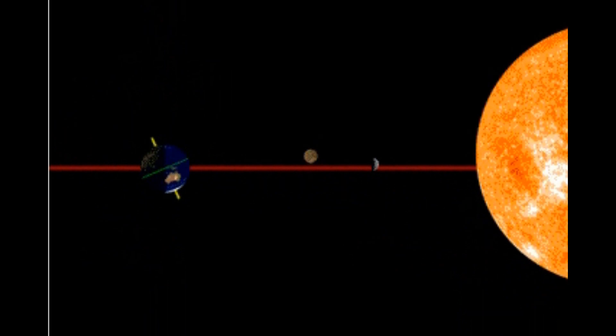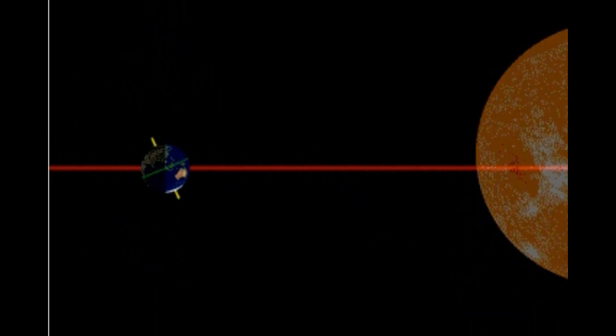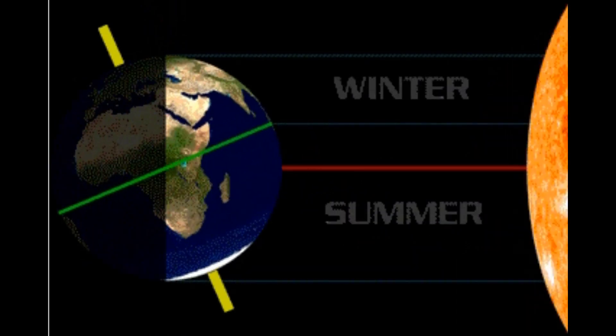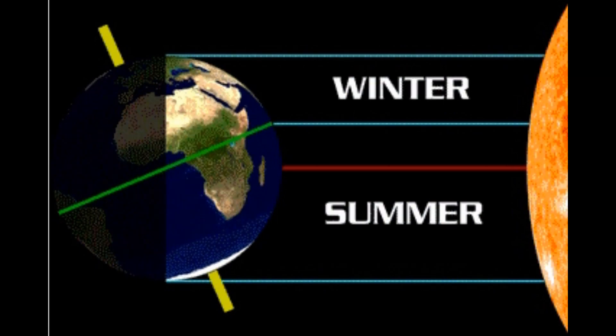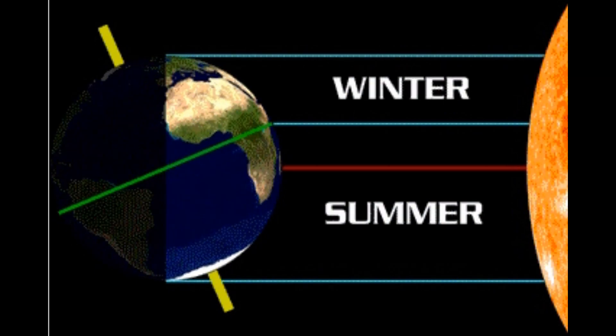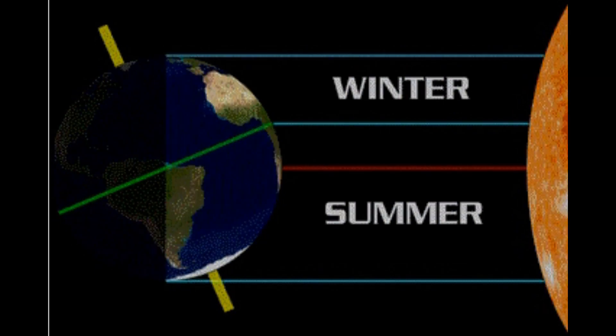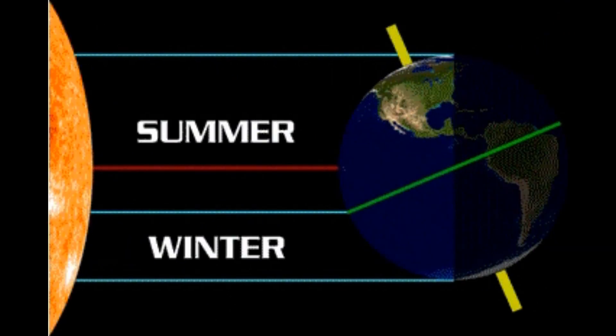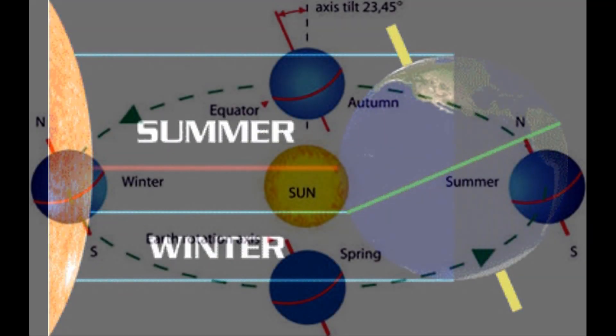Let's take another look. Why do we have that season? We have winter in the north, summer in the south. Six months later, the exact opposite.